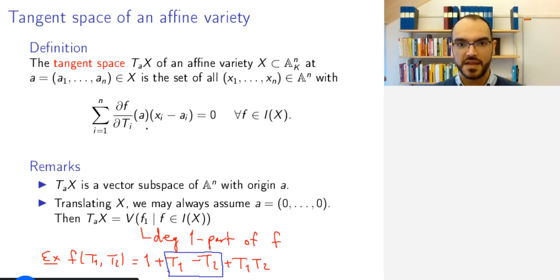And why is this the same as that? Well, when I take these partial derivatives, everything that is of degree 0 will disappear, so it will not contribute. And everything of higher degree, after taking the derivative once, will still have some t_i in it. And t_i, of course, vanishes at 0.